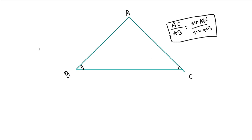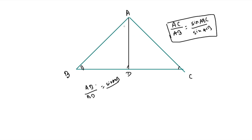In the same figure, if I draw lines AD and CE and work on these two lines, we can write AB upon BD: since we are working on AB, this must be sine ADB upon sine BAD. Similarly, taking AD as the common line across two triangles, we can write: AB upon AD into AC upon AD, applying the sine formula in triangles ADB and ADC respectively.